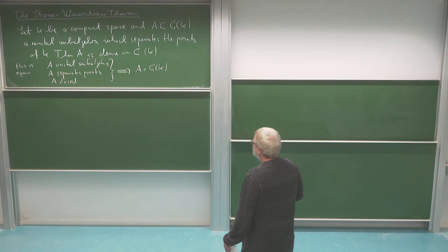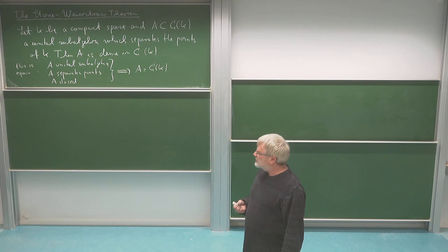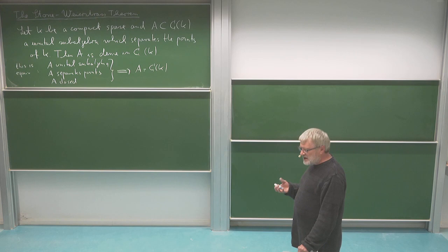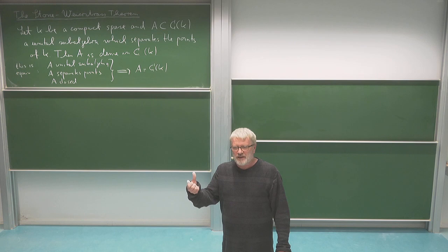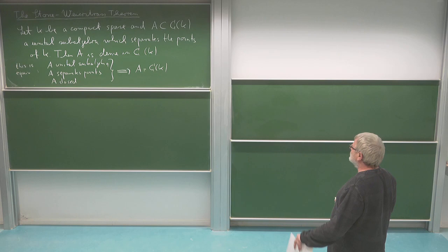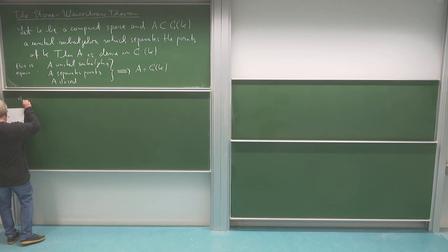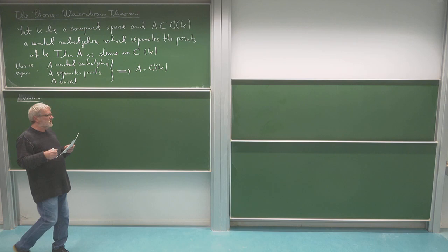Before I start the real proof of Stone-Weierstrass, I first want to do a lemma which shows me that in a situation when I have a closed unital subalgebra, this really has to contain quite a bit of elements. The amazing point is that it seems we are not requiring much about our A, so A could be quite small and maybe there are not many elements there.